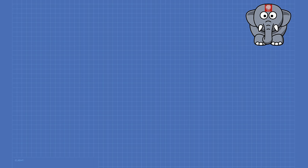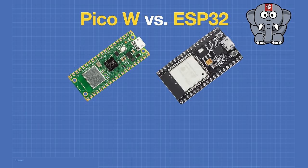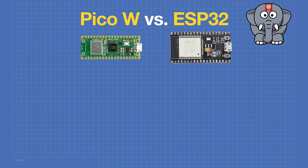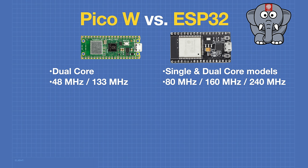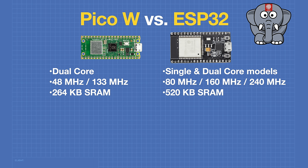The second elephant in the room is simply the ESP32. How does the Pico-W compare to the ESP32, and why would we want to use it instead? The ESP32 certainly seems to come out ahead: the Pico-W has a dual-core microcontroller while the ESP32 is available in single or dual core; the Pico-W runs at 48 MHz with a top speed of 133 MHz while ESP32s range from 80 MHz to 240 MHz; the Pico-W has 264 KB of static RAM while the ESP32 has 520 KB of SRAM.